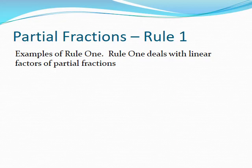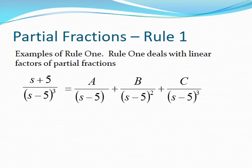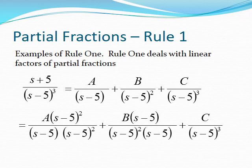We're going to apply partial fraction Rule Number One, which deals with linear factors of partial fractions. If we have this fraction, we want to decompose it. Since we have a third power in the denominator, we represent fractions at the first power, squared, and cubed. Since s is only to the first power, we just need a constant on top for each term — giving us our constants for the square and cube terms.